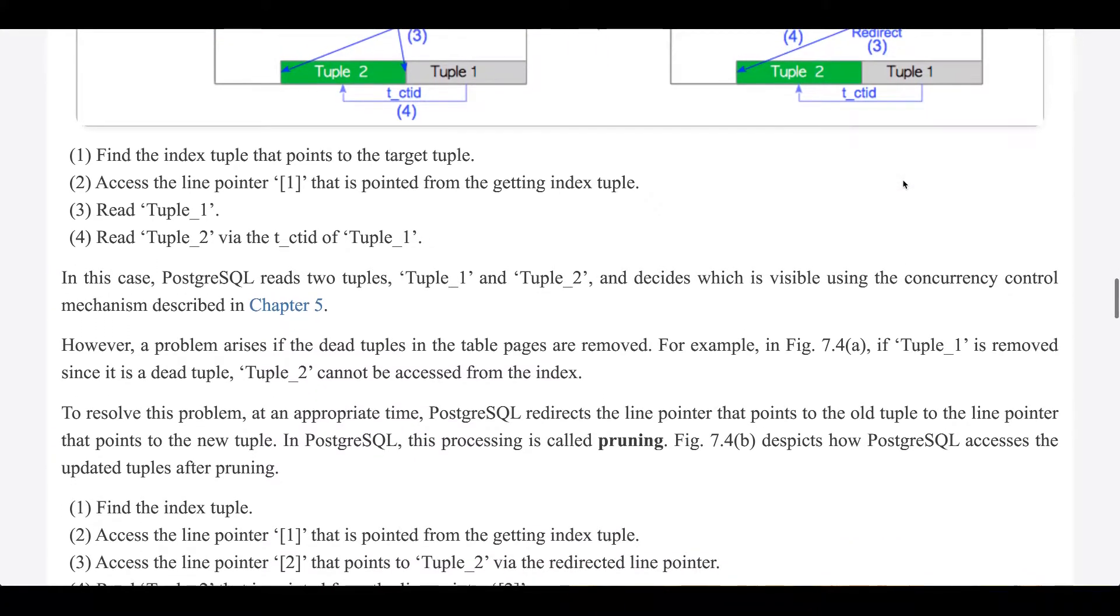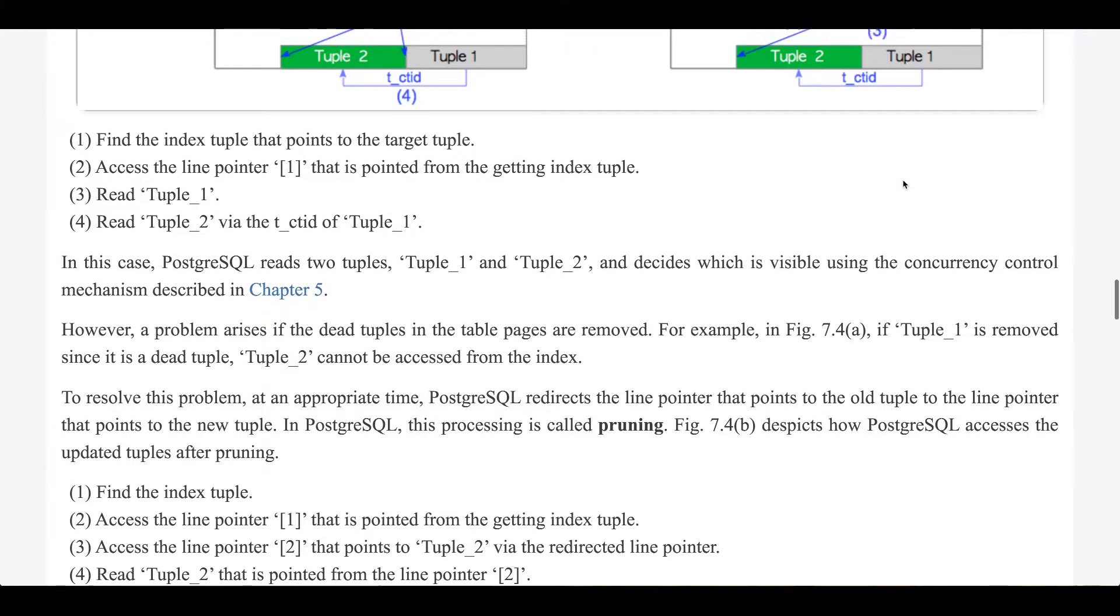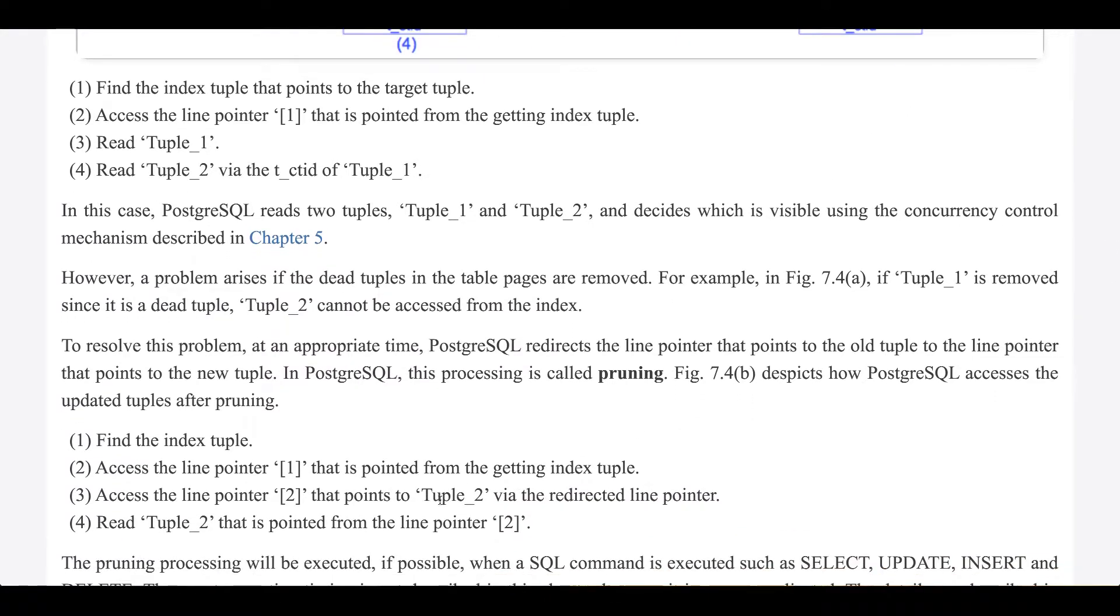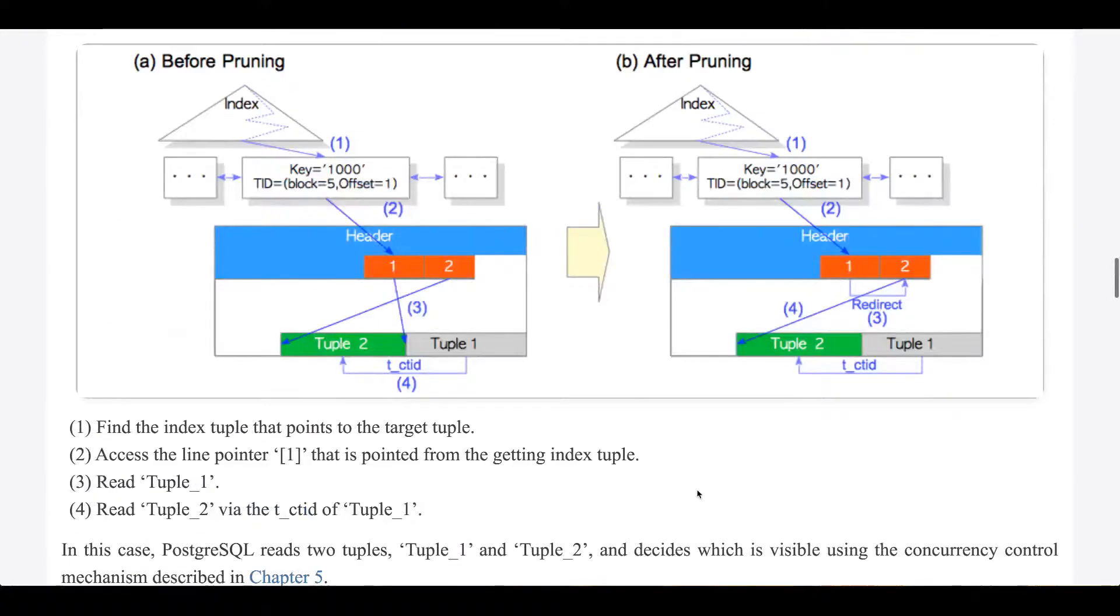To resolve this problem: find the index tuple, access the same as the first two steps from above. But now, in step 3, access the line pointer 2 that points to the tuple 2 via the redirected line pointer.